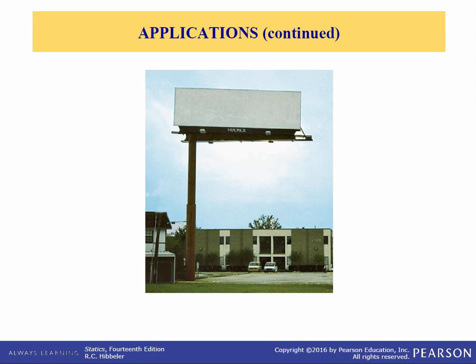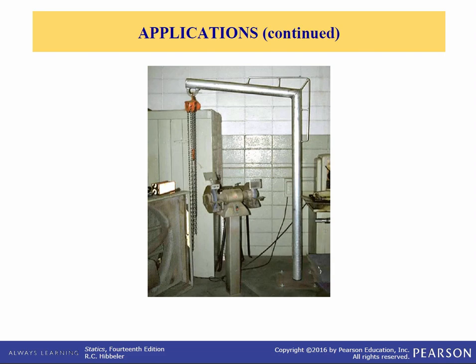First, some applications. This is a fixed column support, right here, and it's supporting this billboard. As you can see, the member is thicker at the bottom than it is at the top. The internal loadings, especially the bending moments, are greater at the bottom than at the top. So to save weight, and therefore money, we'll taper the column. Here you see a crane in a shop, and they've added an additional support at this corner right here, because there's a big bending moment about this point.